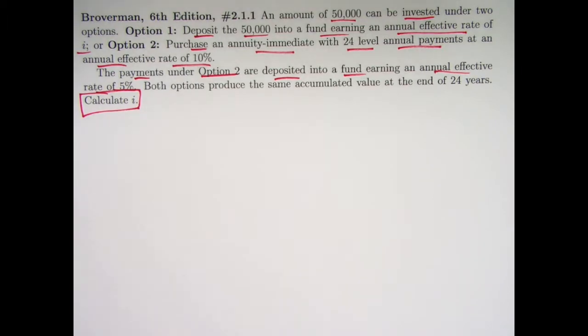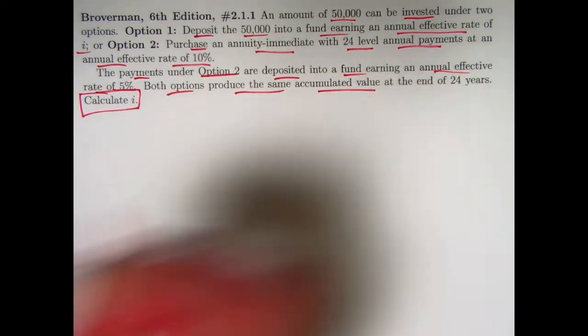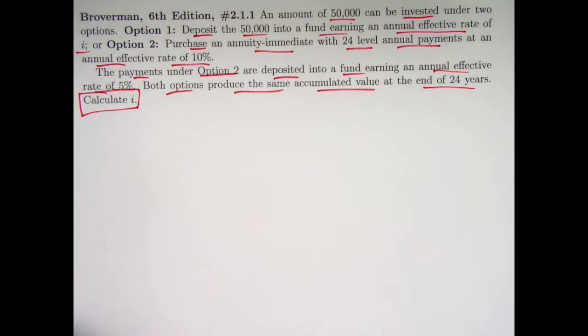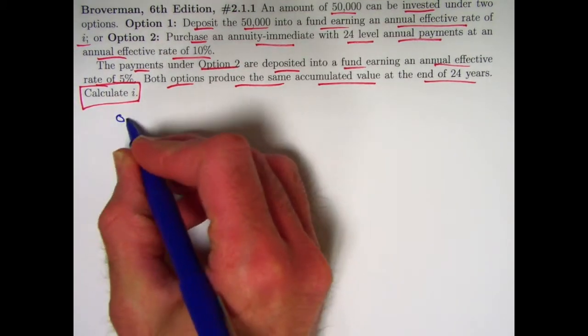Both options, the simple one, option one, and the more complicated one, option two, produce the same future value or accumulated value at the end of 24 years. Calculate I. Alright, that's a lot. Take it step by step here. Let's first think about option one. That's the simpler thing to think about.